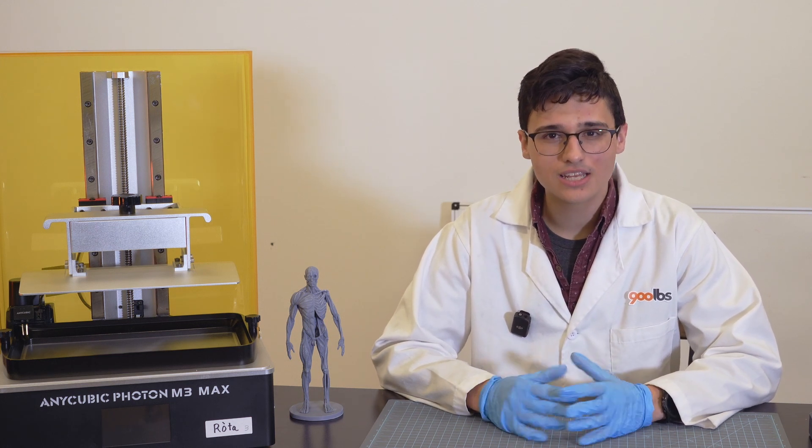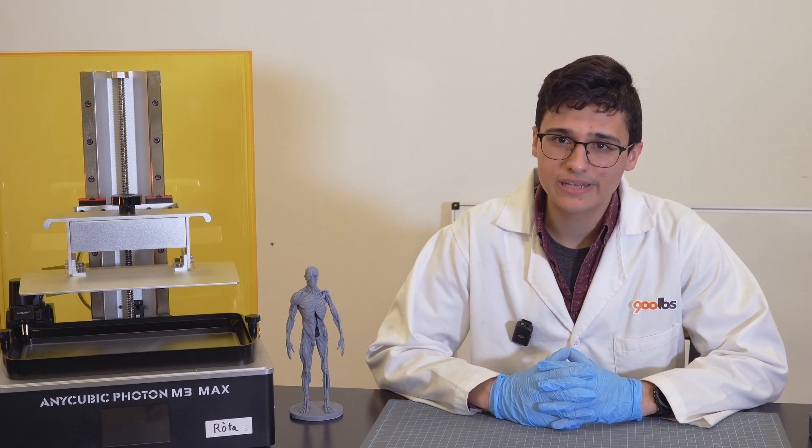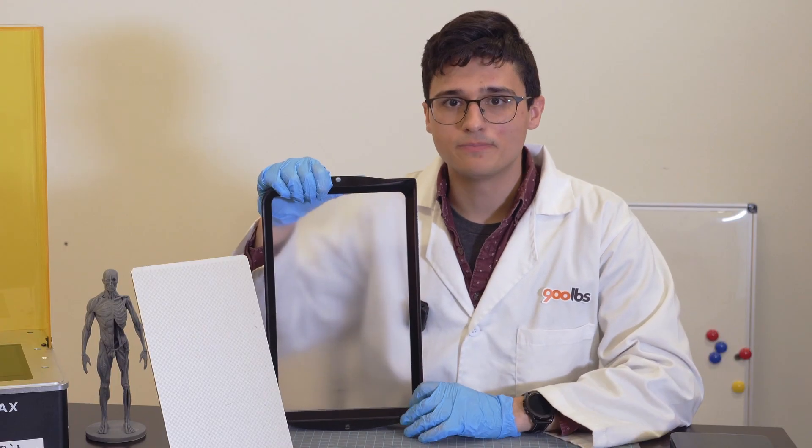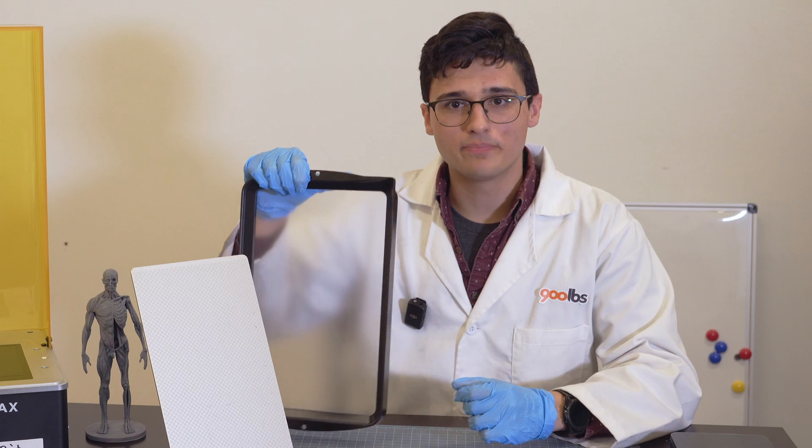What is it, how to replace it, and why you should replace it regularly. So this here is your FEP sheet. It's this clear film that's at the bottom of the vat.